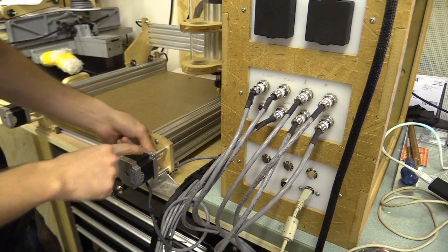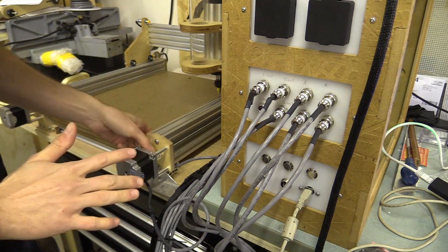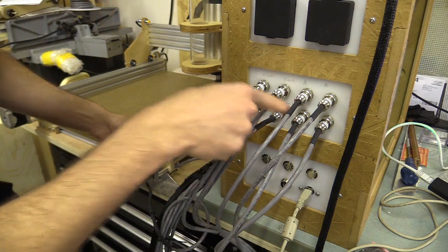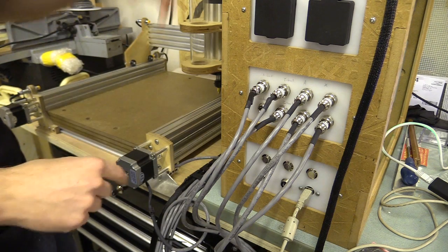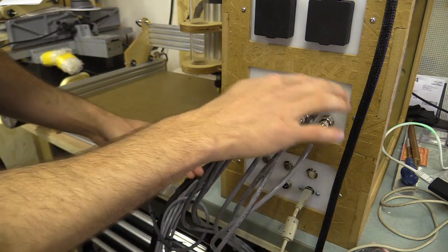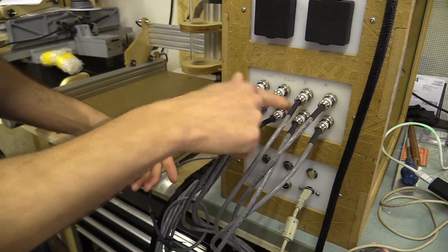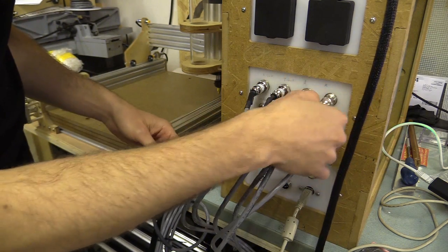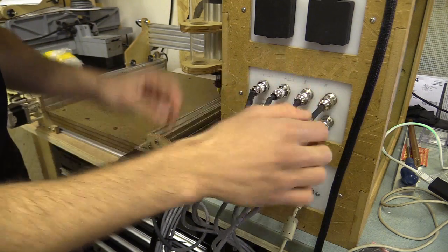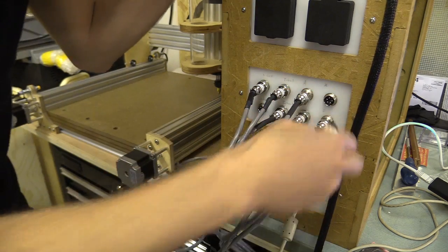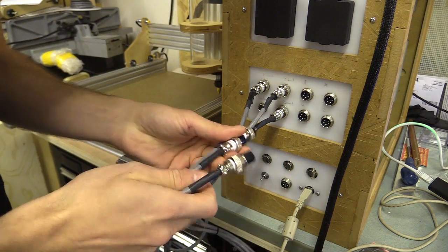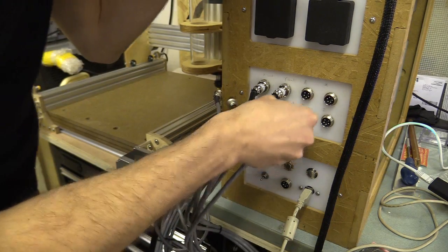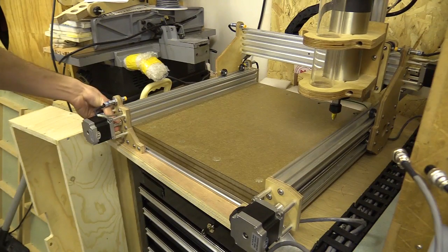OK, so the only stepper motor that seems to be holding when the machine is stationary is Y. All the other ones I can move around a little bit. What I'm going to do is check the wiring by swapping each one with the Y terminal and see if the motor actually holds. I'll start with A, push that in and move across to here, that's holding.